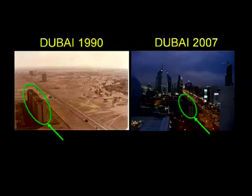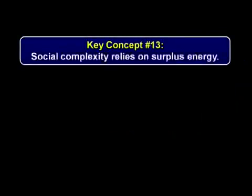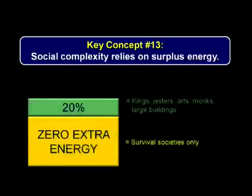Now we can state the 13th key concept of Crash Course: social complexity relies on surplus energy. Societies that unwillingly lose complexity are notoriously unpleasant places to live. Given this, shouldn't we pay close attention to how much surplus energy we've got, and where it comes from?